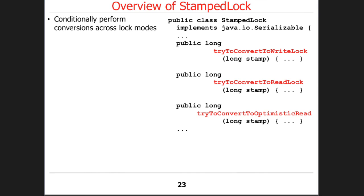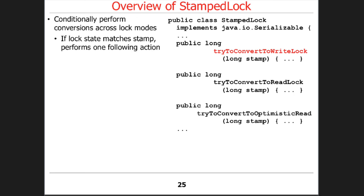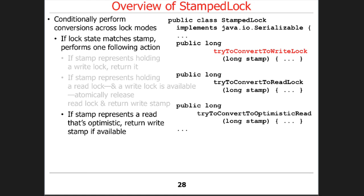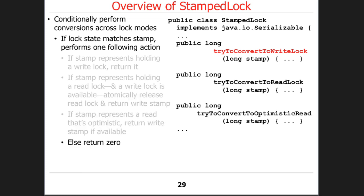There are also conversions across lock modes, which is important for your homework assignment. There's a method called tryConvertToWriteLock — this is lock upgrading. If you have a read lock and want to make it a write lock, you can try to convert it. If the stamp represents holding a write lock, return it — you're already done. If the stamp represents a read lock and a write lock is available, it atomically releases the read lock and returns a write stamp. If the stamp represents an optimistic read, return a write stamp if available; otherwise fail because somebody else already holds the write lock.